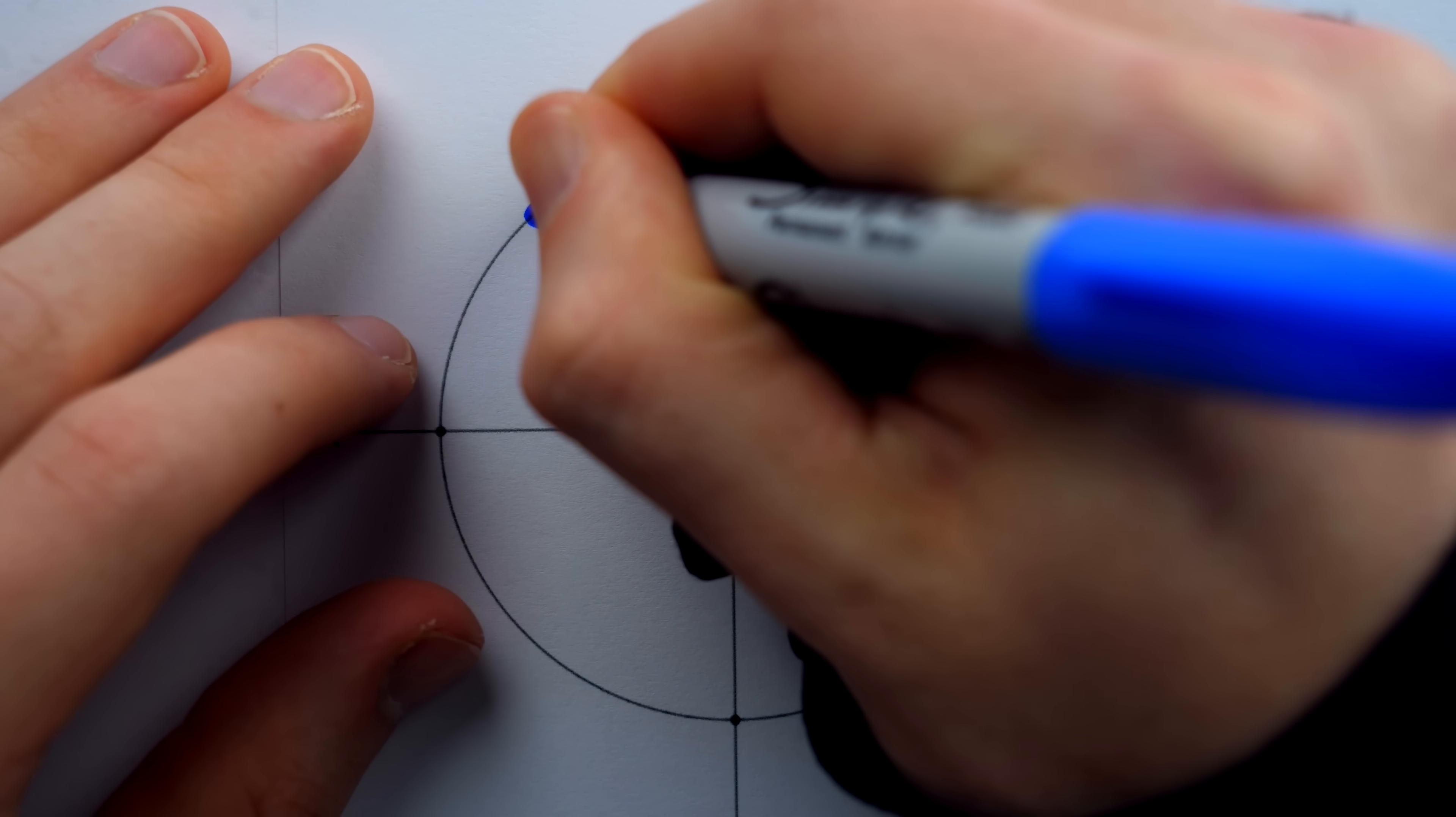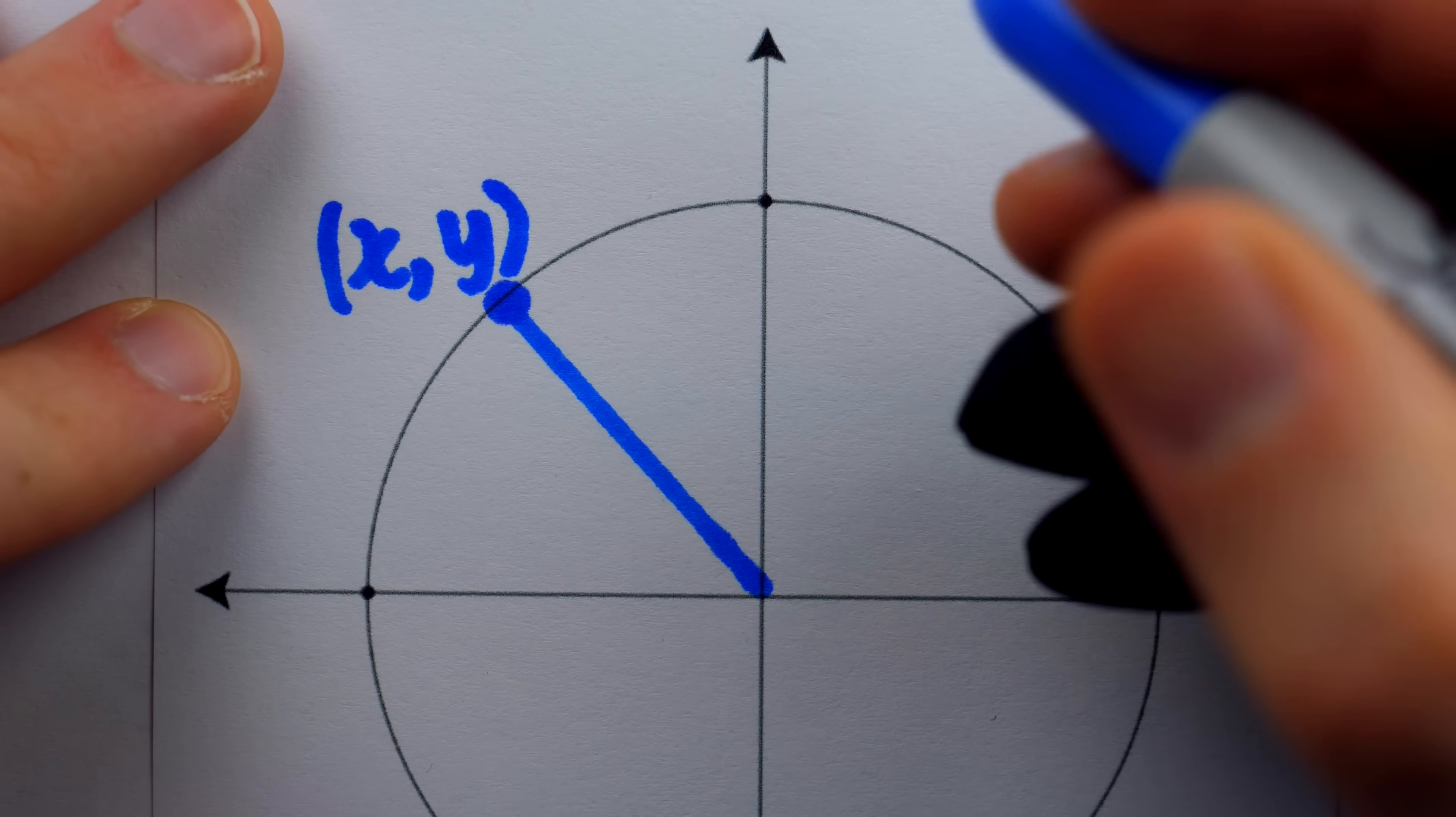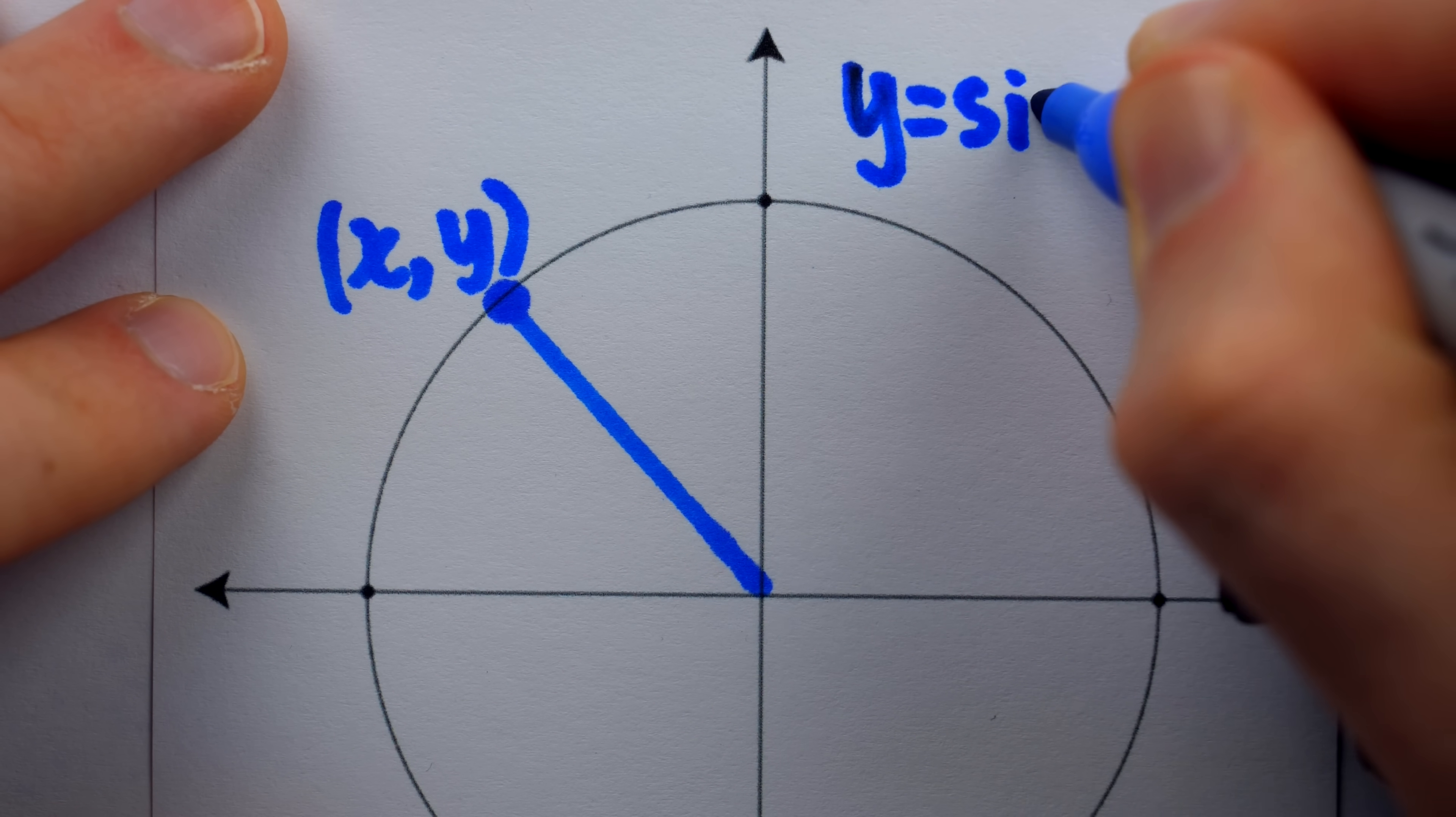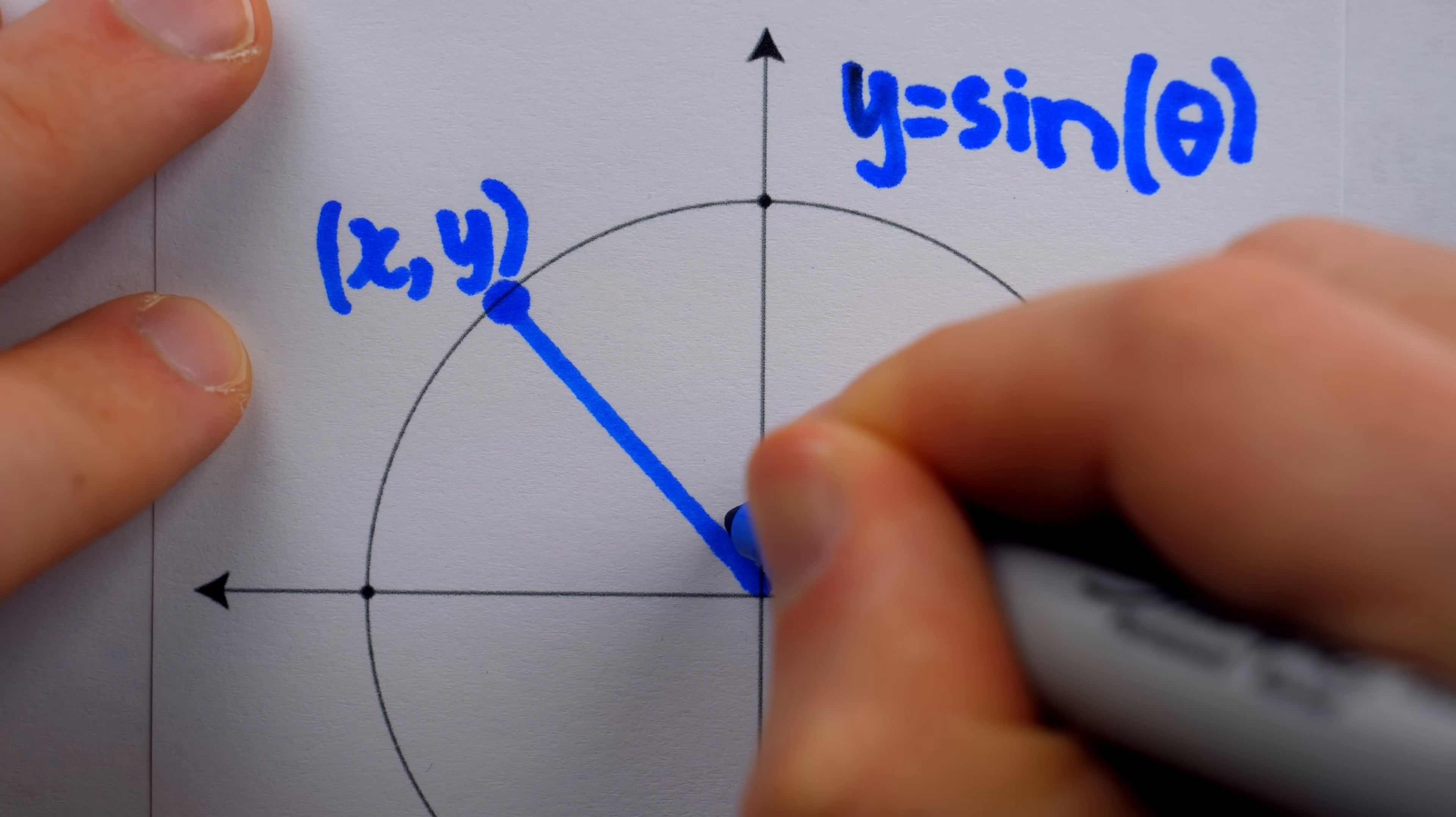Just pick a point on the unit circle, draw the segment from the origin to this point. Then the y value of the point is defined to be the sine of the angle from the x-axis to that segment.